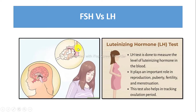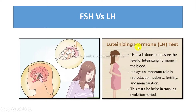FSH stimulates spermatogenesis through the production of androgen binding proteins by Sertoli cells, whereas LH stimulates the production of testosterone by Leydig cells.